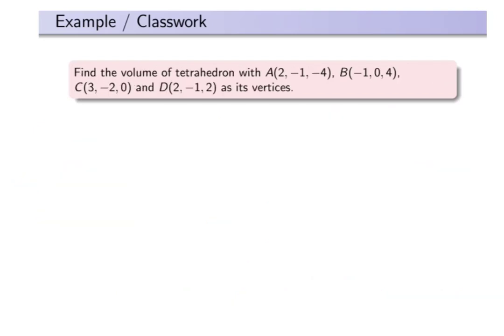Please attempt this follow-up question. We have the same points A, B, C, and D as before. Find the volume of the tetrahedron with these four points as the vertices. Please leave your answer in the comments.